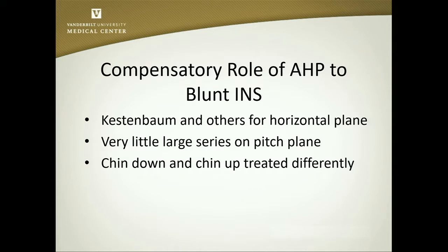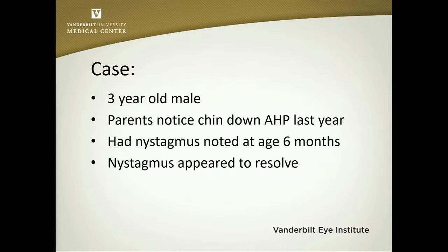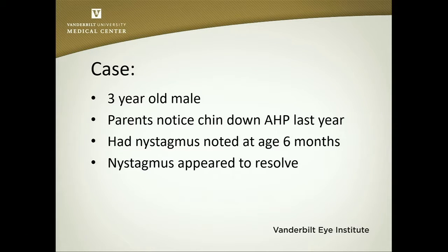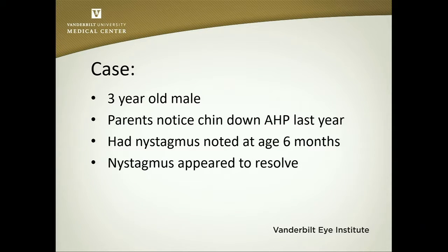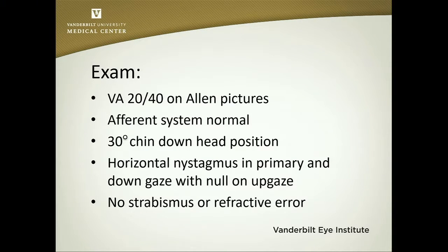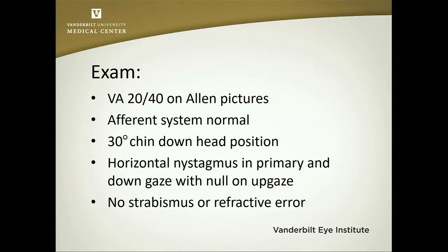Chin up and chin down head positions have to be treated differently because you need to operate on different muscles. This case could help tee up this discussion. This is a three-year-old boy whose parents noticed a chin-down head position about one year ago. They had noticed nystagmus at six months of age, appearing congenital in nature, but this nystagmus appeared to resolve concomitant with the development of the chin-down head position. This child had relatively good visual acuity, a normal afferent system, a 30-degree chin-down head position with horizontal nystagmus in primary position and in down gaze, and a null of this horizontal nystagmus on up gaze. He had no significant strabismus and no refractive error.